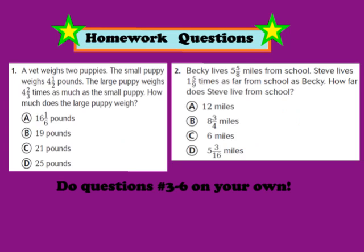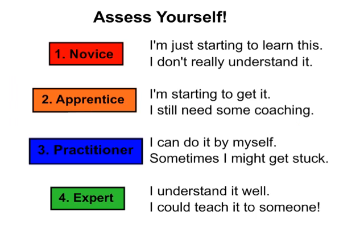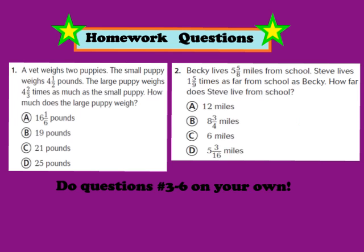Your homework for tonight is to complete question numbers 1 and 2, as well as numbers 3 through 6, in your GoMath workbook on page 162. Don't forget to assess yourself somewhere on your homework page: are you a 1 novice, 2 apprentice, 3 practitioner, or 4 expert? We hope you have a great evening, and we look forward to seeing you in class tomorrow.